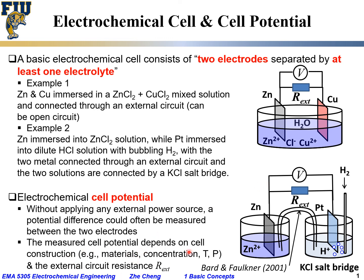The potential also depends on the external circuit resistance. For example, if you have zero resistance — a so-called short circuit condition — the potential you measure will be close to zero. On the other hand, if you have open circuit, meaning the external resistance goes towards infinity, you will have the open circuit voltage, and that will be a different cell potential. Quite often that will be the maximum, and sometimes we call it the equilibrium cell potential. We will talk about cell potential — the voltage difference between the two electrodes — in greater detail later.